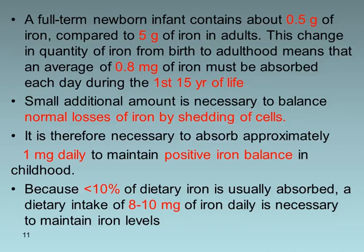A full-term newborn contains about 0.5 grams of iron, while an adult contains 5 grams. This means an average of 0.8 mg of iron must be absorbed each day during the first 15 years of life. Because less than 10% of dietary iron is usually absorbed, a dietary intake of 8 to 10 mg of iron daily is necessary to maintain iron balance in childhood.